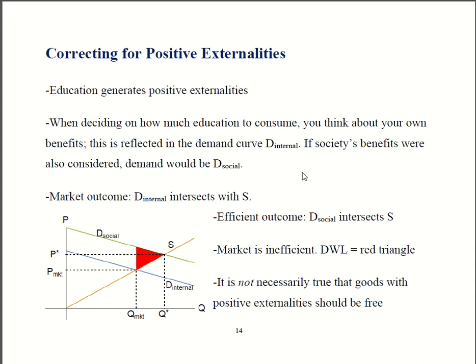One point I made earlier: it's not necessarily true that goods with positive externalities should always be free. On my diagram here, the efficient price was not zero, and the efficient quantity was not way out here where the price would be free. So free college is not necessarily efficient. Likewise, free high school, free elementary school, and free middle school — which we have in the U.S. — might not be efficient. You've got to do some math to figure out whether those social benefits are really worth the cost. You can have too much of a positive externality. Maybe it is justified to have free college or free high school, but you can't just assume it's true based solely on this analysis. You've got to do some math to find out if that is the best policy.